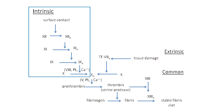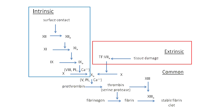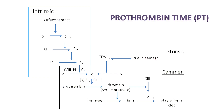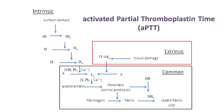This portion denotes the intrinsic pathway, this one is the extrinsic pathway, and here we have the common pathway. Prothrombin time or PT represents the extrinsic and common pathway. The test can vary from lab to lab, which is why it is standardized by INR. Activated partial thromboplastin time or APTT represents the intrinsic and common pathway. This test can also vary and needs to be compared with the control APTT supplied alongside the test results.